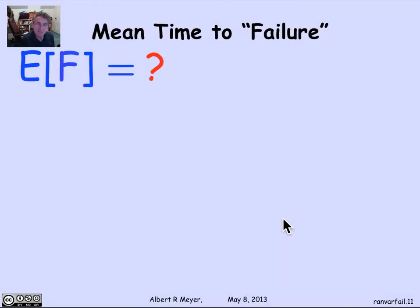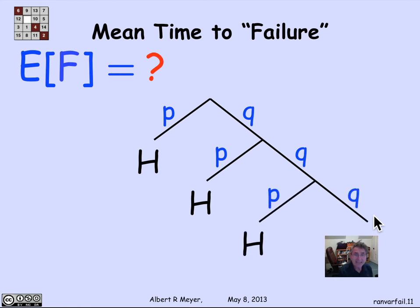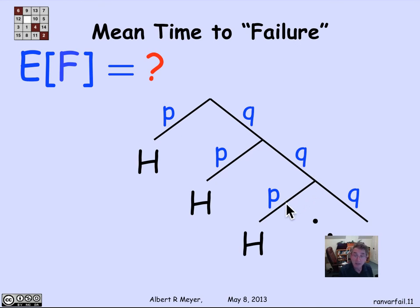Let's look at a more intuitive way to derive the expected time to the first head, without generating functions. Consider the outcome tree for flipping until you get the first head. Starting at the root, with probability P you flip a head immediately and stop. With probability Q you flip a tail, then with probability P you flip the head and stop. If you haven't flipped a head by the end of the second step, with probability Q you flipped a tail again, and there's a possibility of stopping after the third step with a head, and so on.